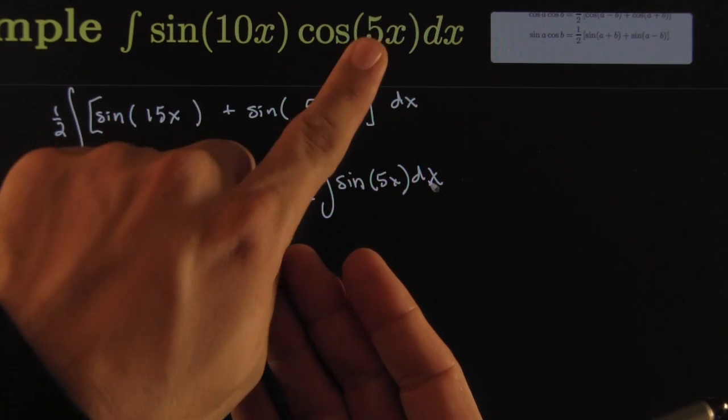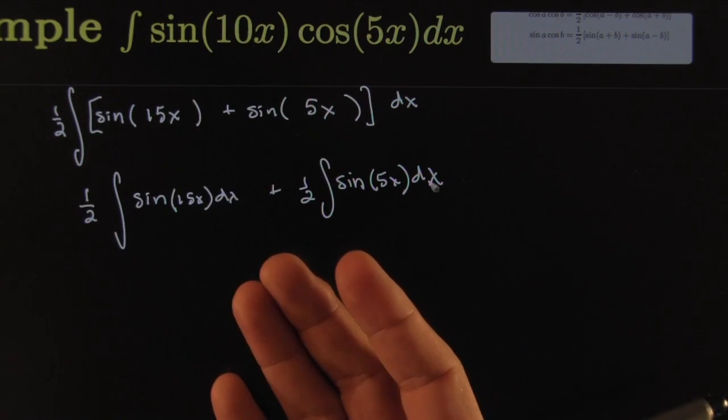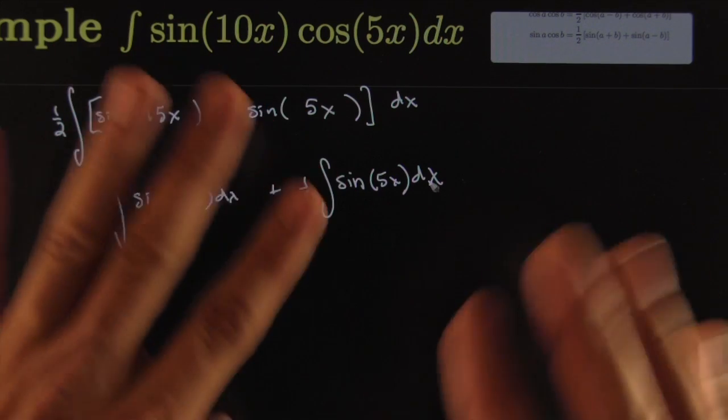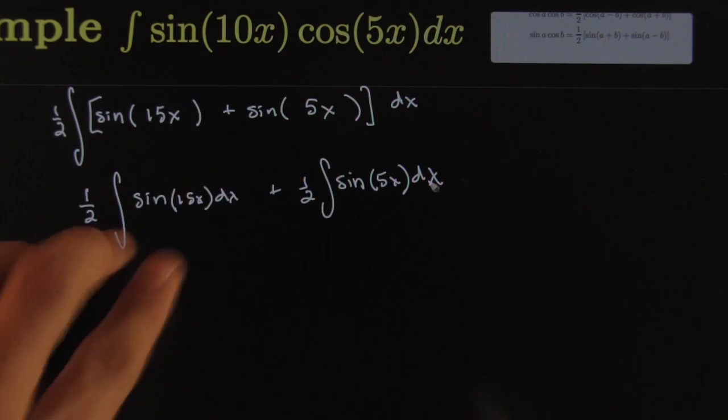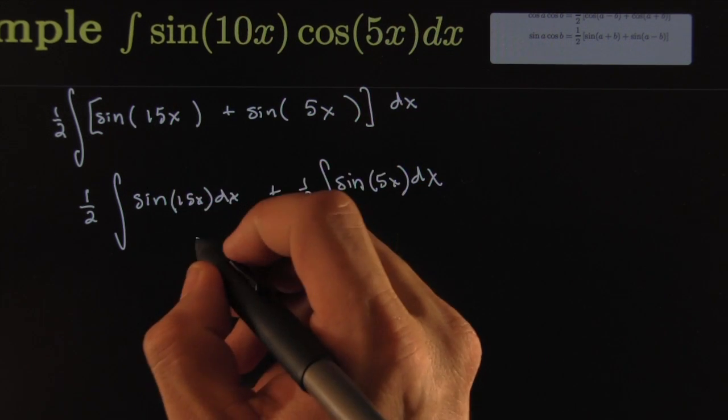This is a thousand times easier than the original problem with the product. There's no way we can handle that. This would be a nice way to do it, one way to do it - we use that famous identity. Here you would do a u-substitution.